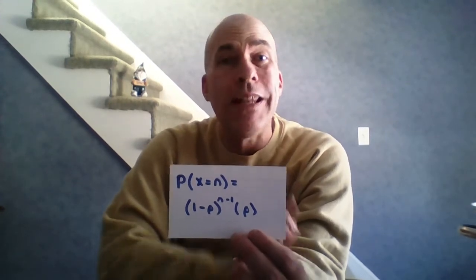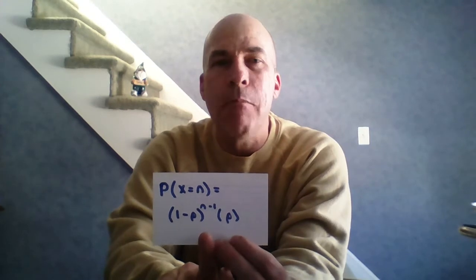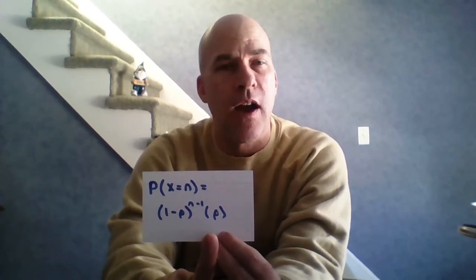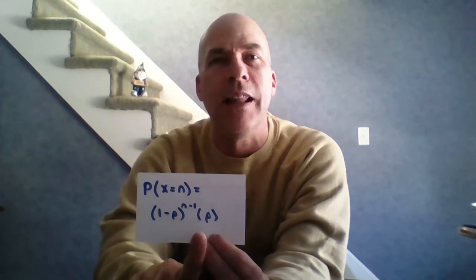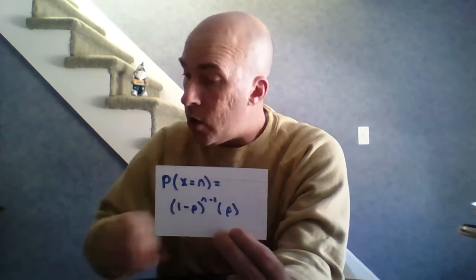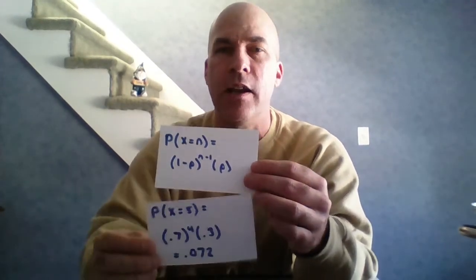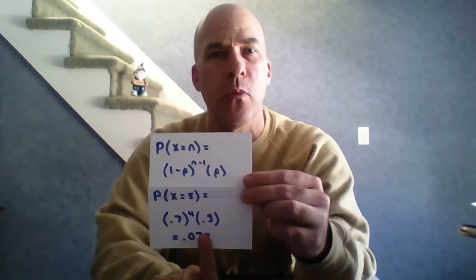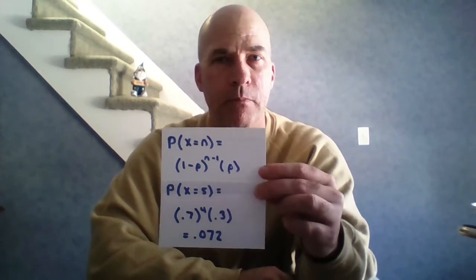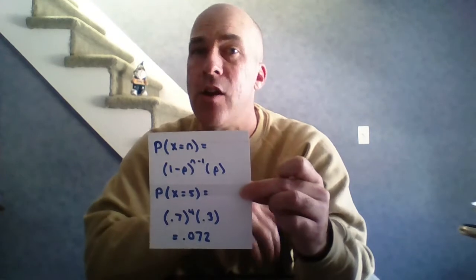Given that X has a geometric distribution with probability of success p and probability of failure (1 − p), the formula is: P(X = n) = (1 − p)^(n−1) × p. This means we need to fail n − 1 times and then finally succeed on the last trial. In our problem, the probability it takes five trials is: fail four times, then succeed — (0.7)⁴ × 0.3. The formula looks complicated, but it just means fail n − 1 times and succeed on the last trial.